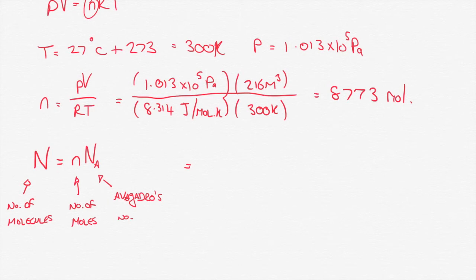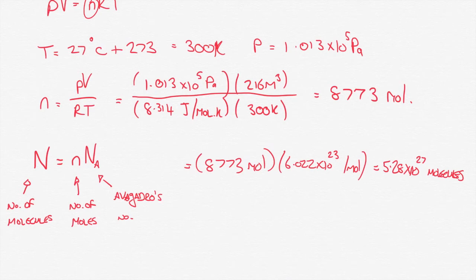The notation is awkward, but unfortunately there's not really that much getting around it. So when we multiply 8773 moles by 6.022 by 10 to the power of 23 per mole, so molecules per mole is the units of Avogadro's number, we get an answer of 5.28 by 10 to the power of 27 molecules. So we've got a total of 5.28 by 10 to the 27 molecules of nitrogen in the room. And that's the first part of this problem done.